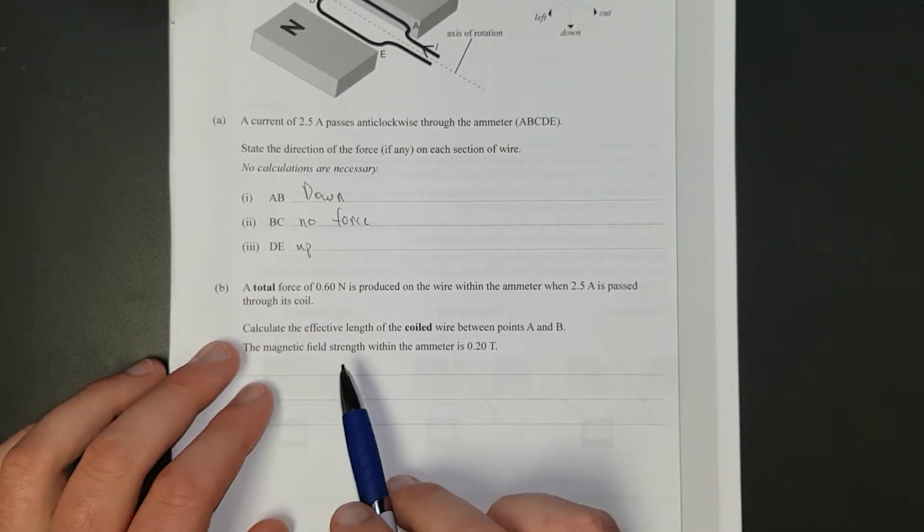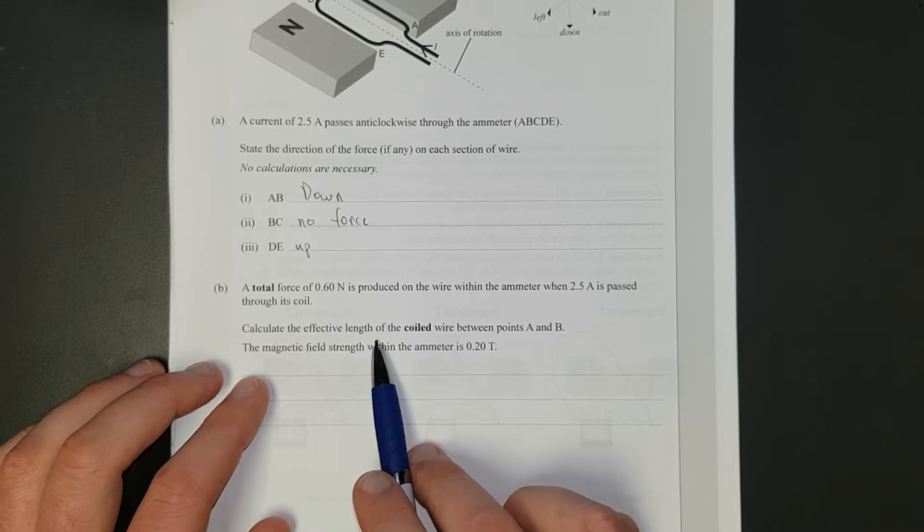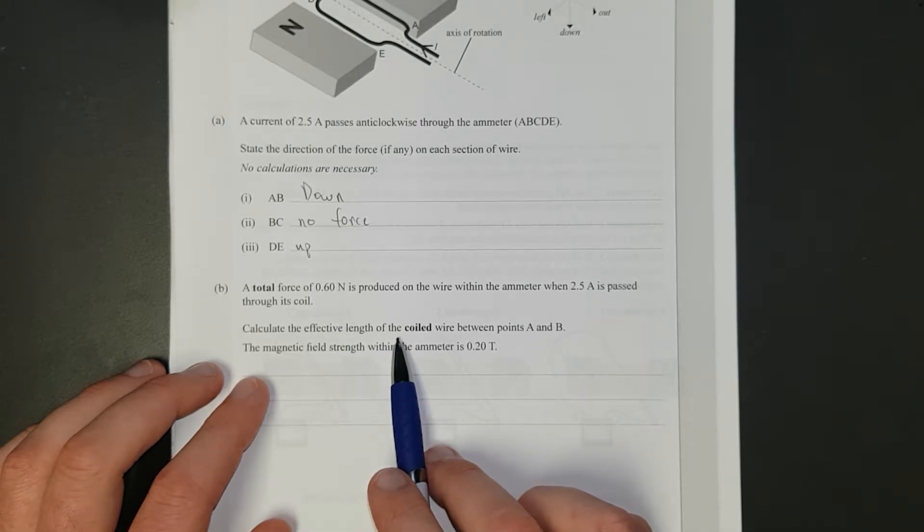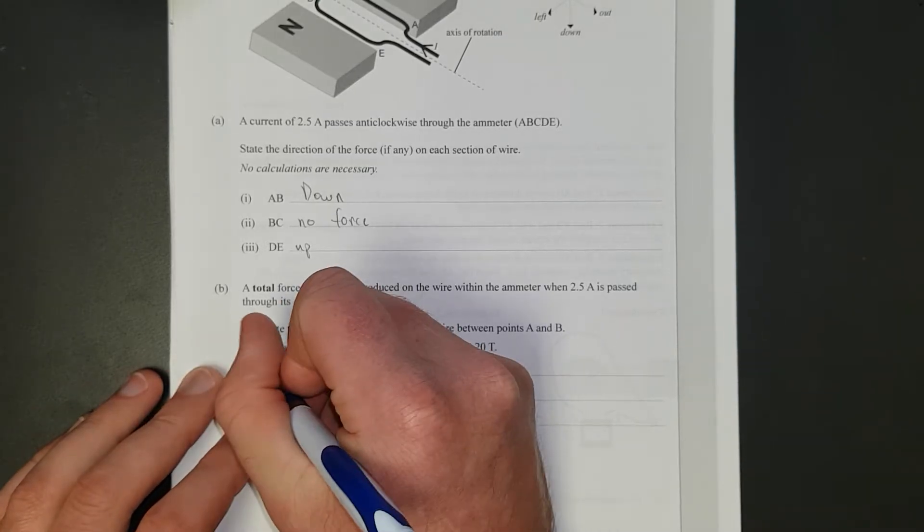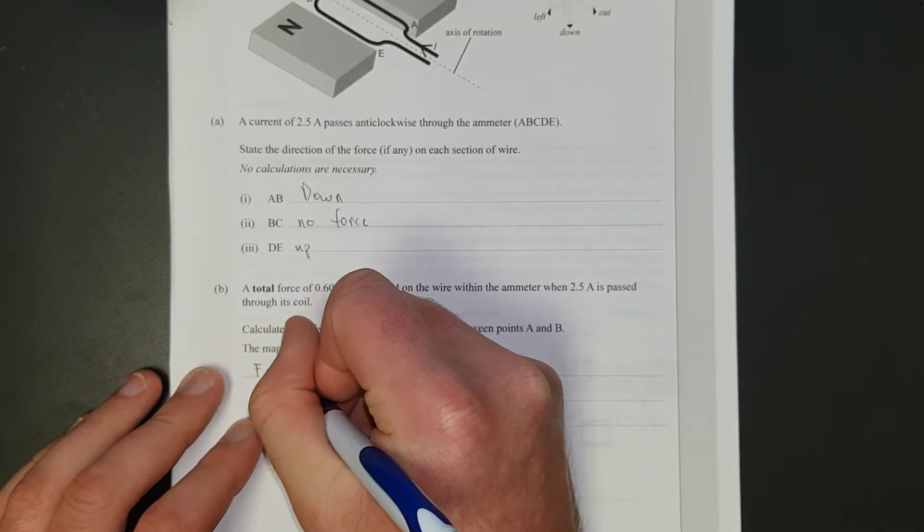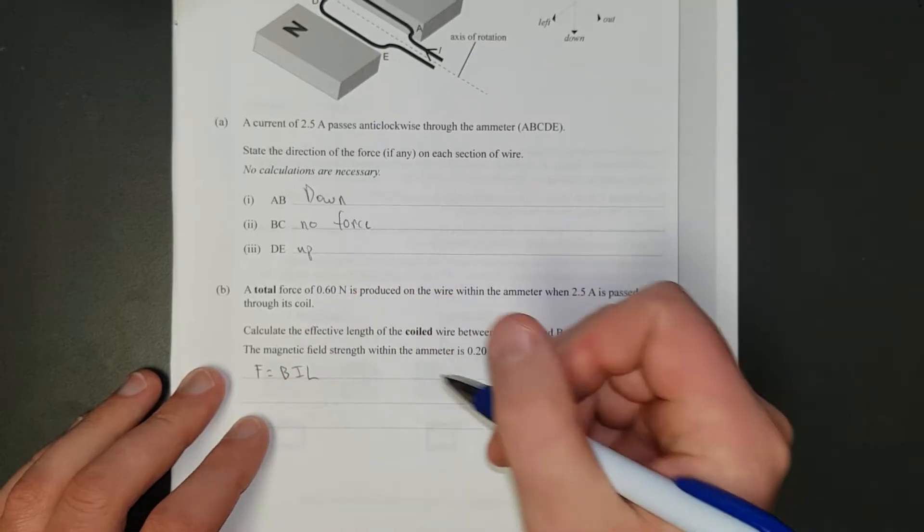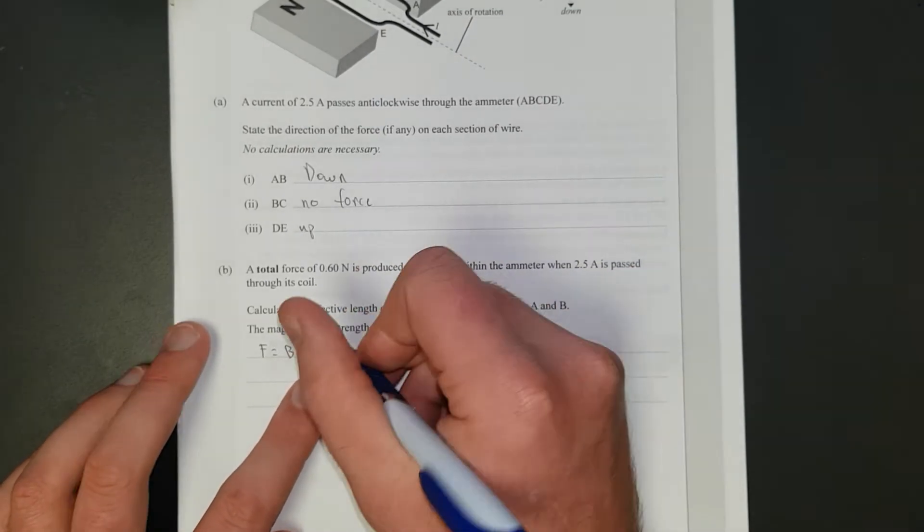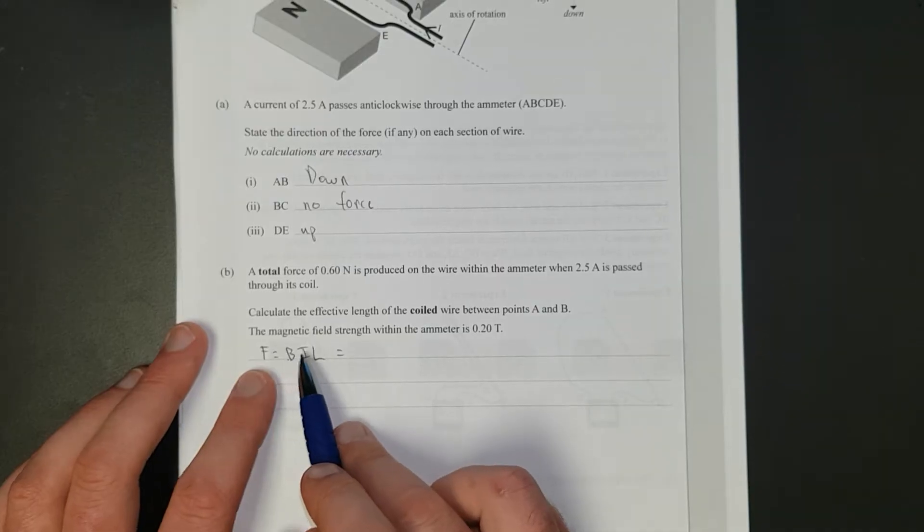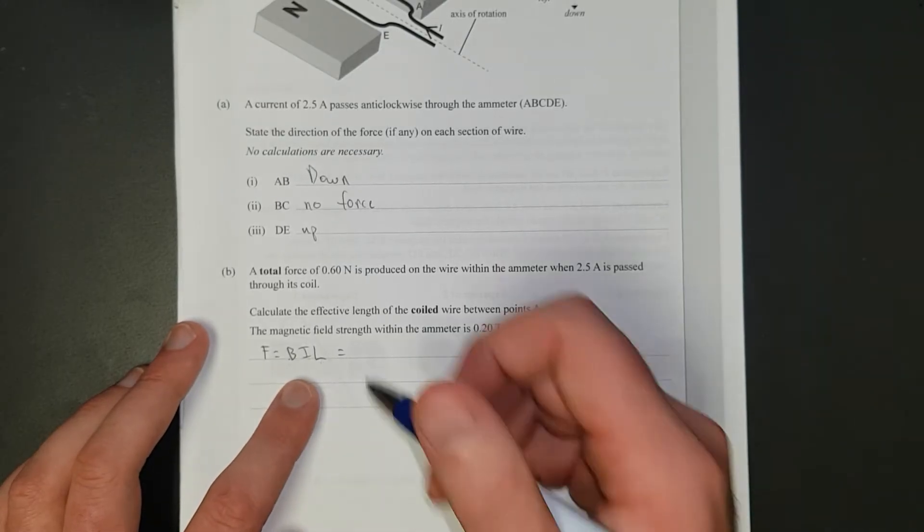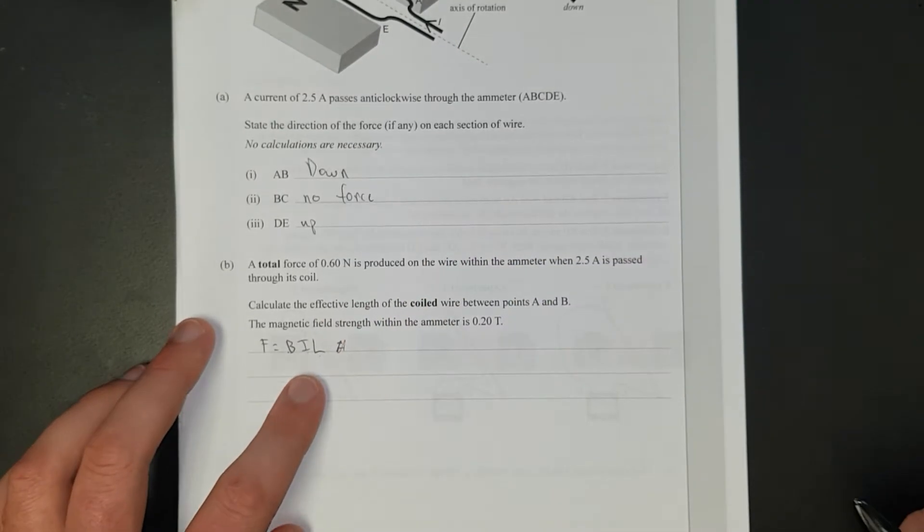2.5 amps is passed through. Calculate the effective length of the coiled wire between A and B. The magnetic field strength is that. So, in your formula sheet, you've got F equals B-I-L. Use the force to pay the bills. In other words, it is the magnetic field times the current times the length of wire.